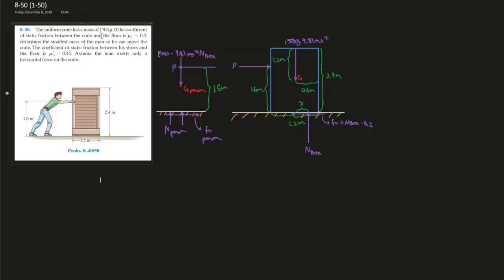The uniform crate has a mass of 150 kilograms. If the coefficient of static friction between the crate and the floor is mu equals 0.2, determine the smallest mass of the man so he can move the crate. The coefficient of static friction between his shoes and the floor is mu equals 0.45. Assume the man exerts only a horizontal force on the crate.